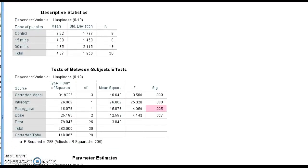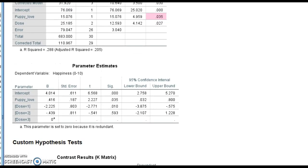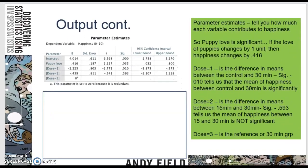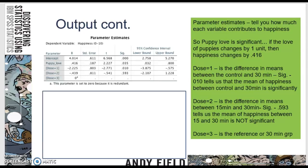Now I'm going to explain the parameter estimates. So what do the parameter estimates tell us? The parameter estimates tell you how much each variable contributes to happiness.